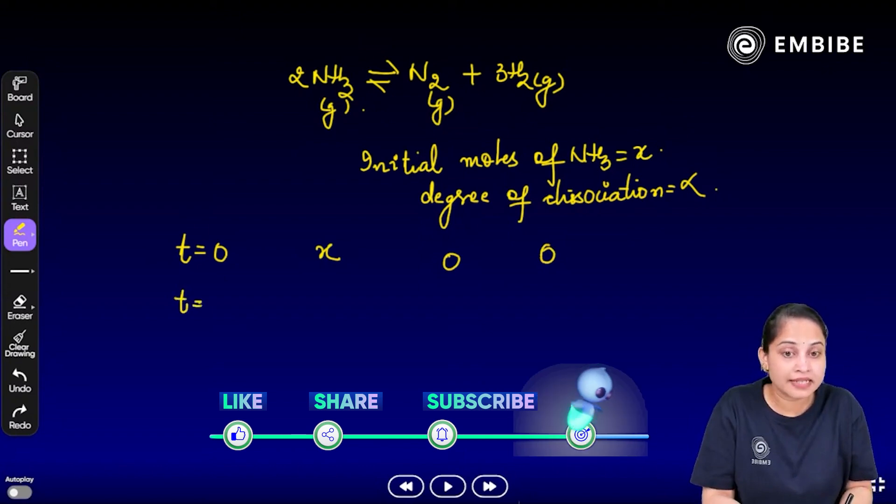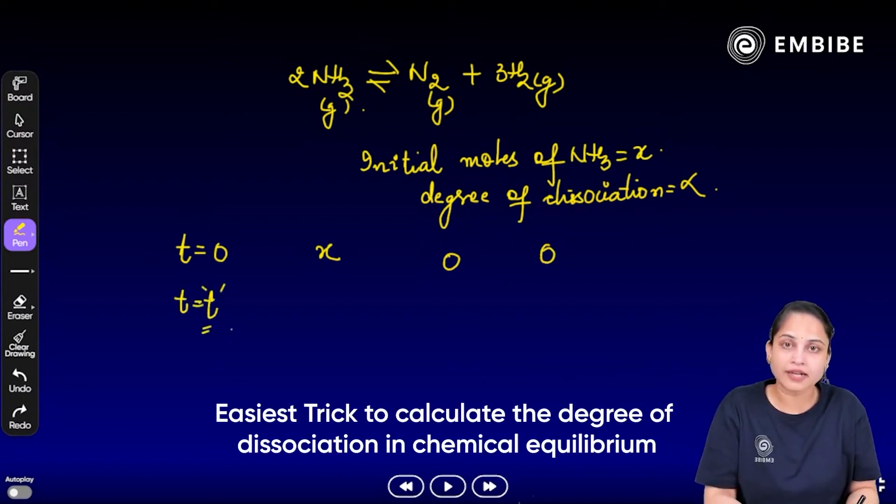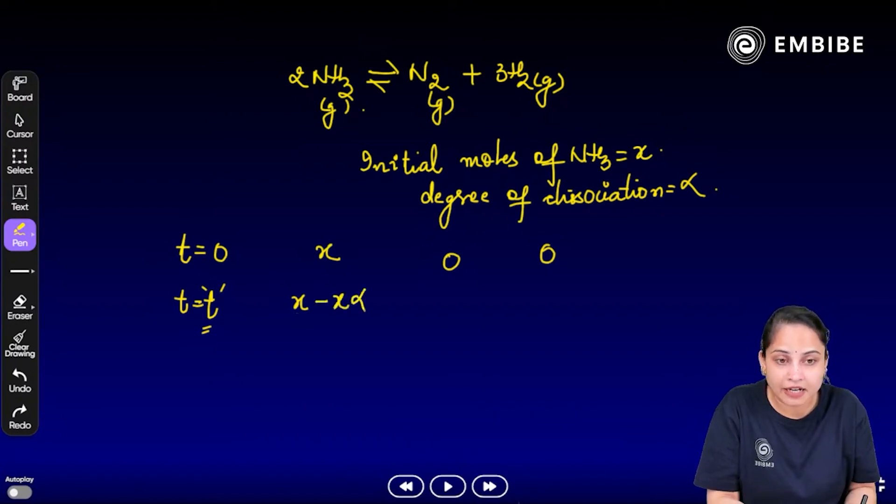At time t, when the time t we do have—at time t or you can say at an equilibrium condition—you will write x as it is minus x alpha.